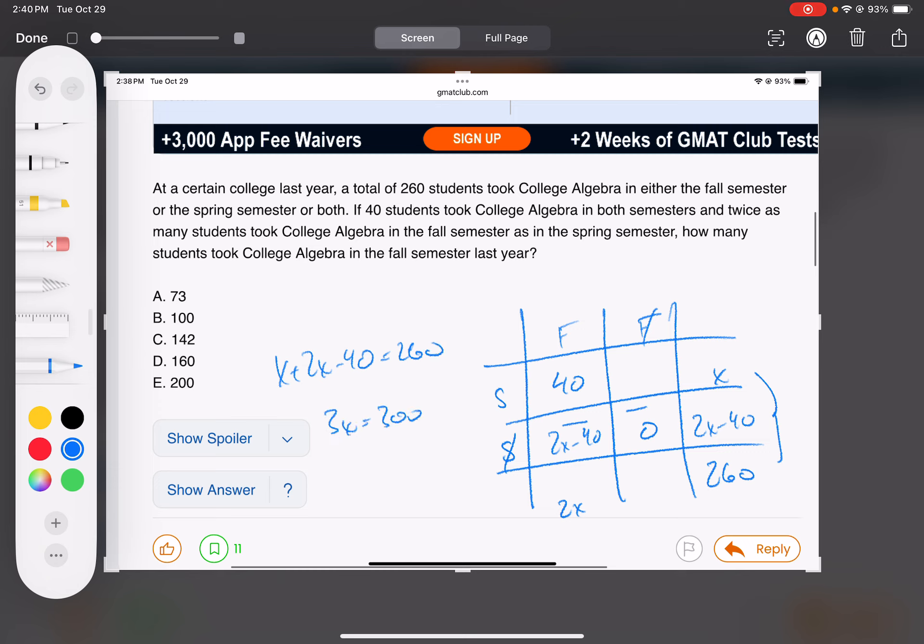And then I can add this column down. x plus 2x minus 40 equals 260. 3x equals 300. x equals 100. And that is, for spring, is 100. So fall is twice that, so 200. Done.